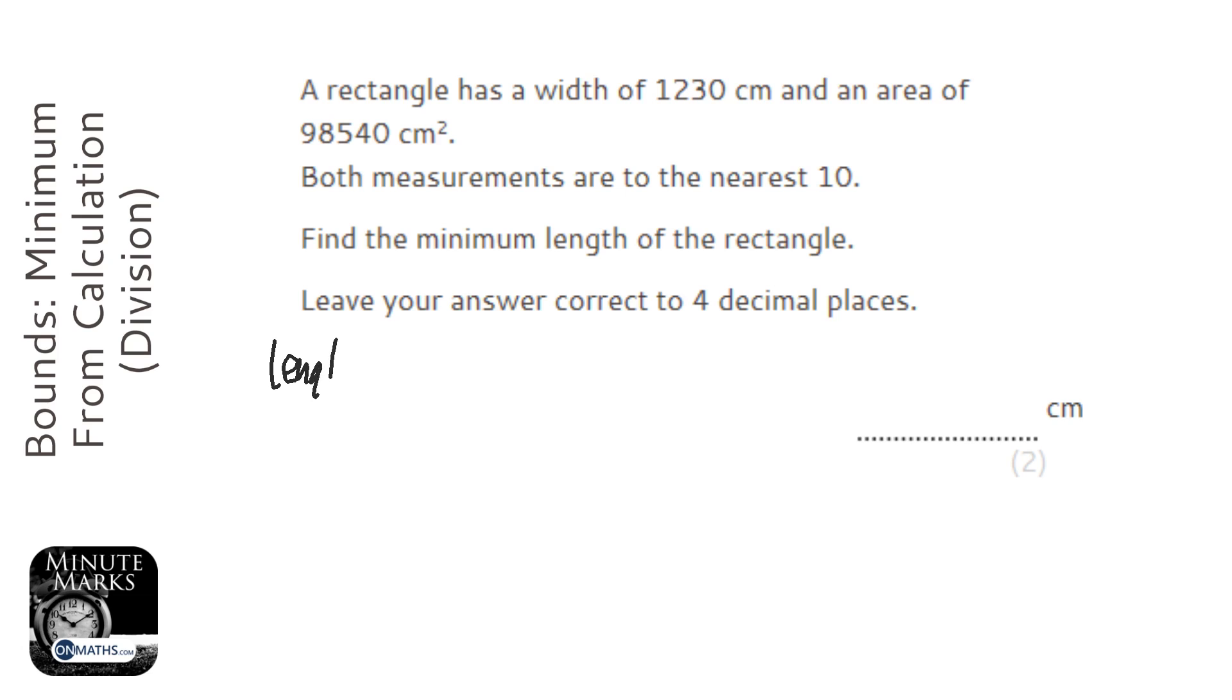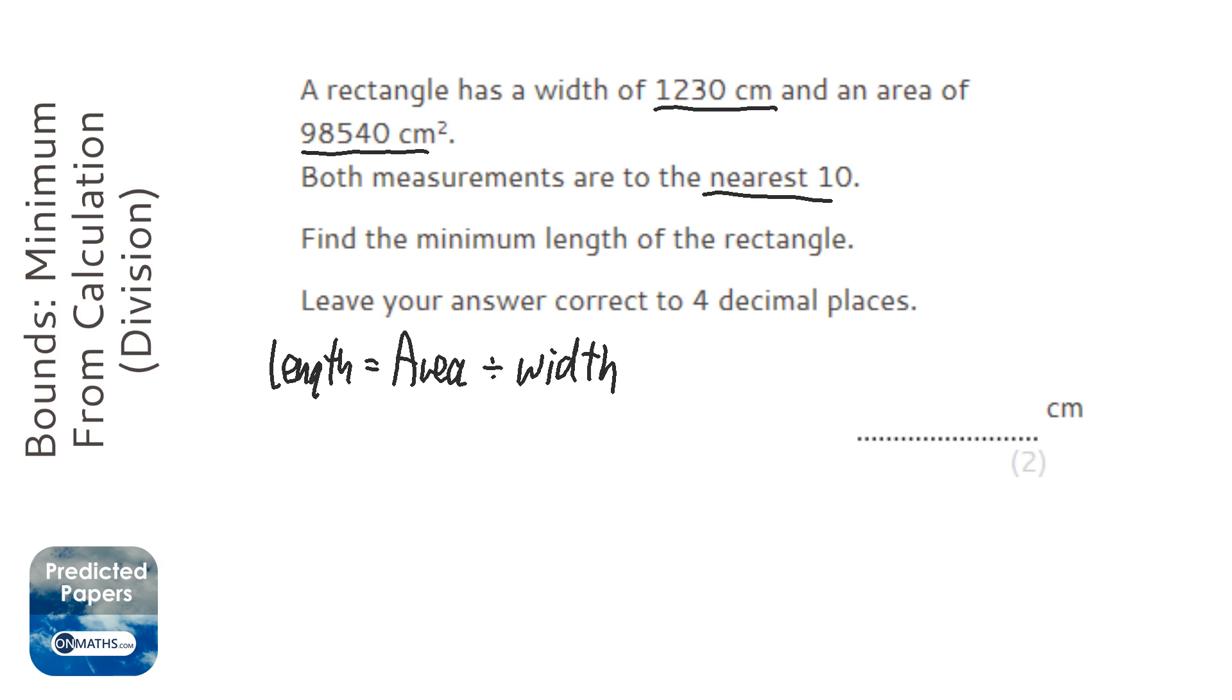Now, the length will be the area divided by the width. But it says each of the measurements are rounded to the nearest 10, so each of these could be slightly different before they were rounded. Now it wants the minimum length, so the first thing I'm going to do is work out the upper bound for both of these.